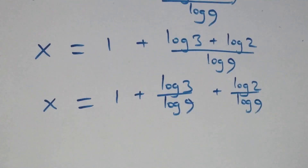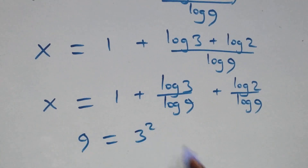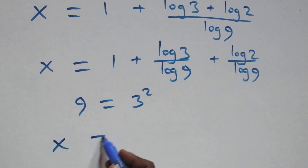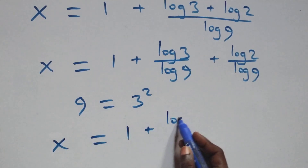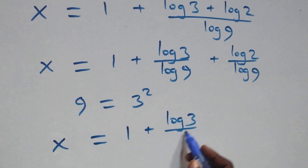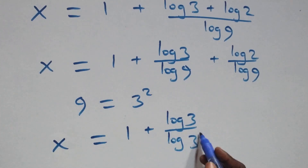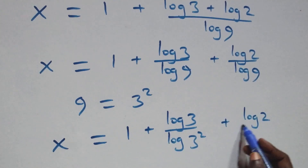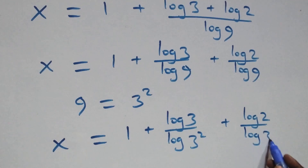That is, next step here: 9 can be written as 3 times 3, that is 3 squared. Then what we have here becomes x equals to 1 plus log 3 over log 3 squared, plus log 2 over log 3 squared.